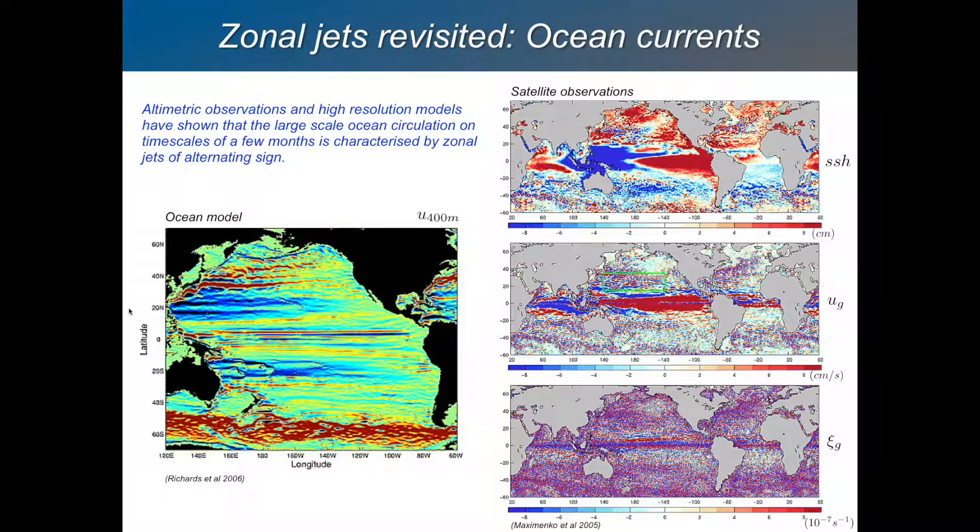If you look over a very long time average, you'll see the gyres - the anticyclonic gyres, the Gulf Stream, the Kurashio. If you look on timescales of a few months, what you tend to see are these zonally oriented streaks which alternate in sign.